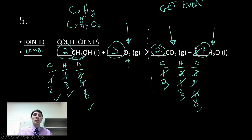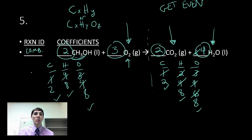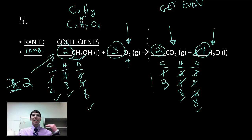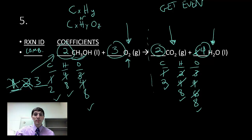One other note: if you get to a point where everything has gone wrong and you just can't seem to get it to balance, step 7 says erase everything, start over, and try the next multiple on your first coefficient. I may have gone through the whole thing with a 1 out front, and it just didn't work out, so I erase everything and try a 2, then a 3, and keep going until you find something that works. You're going to have to work through these — some are easier than others. I hope this was helpful. Thank you.